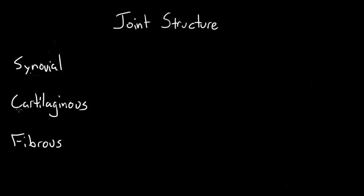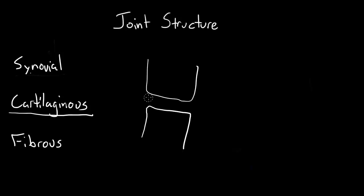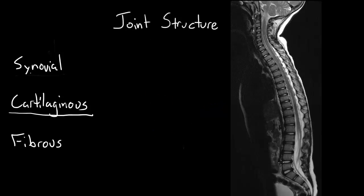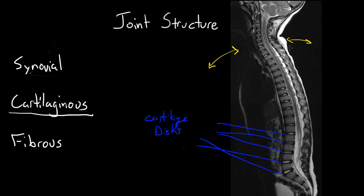Cartilaginous joints are two bones directly connected by cartilage. Because of this direct connection, there's a lot less mobility than with synovial joints, though a certain degree of movement is maintained. The joints of the spine — the intervertebral joints — are the best examples. Here's an MRI of the spine in the sagittal plane, so it's like you're looking at the patient standing upright from the side. Between each vertebral body you can see a large cartilaginous disc. Each individual joint allows only limited motion, but in combination they can be quite flexible. There's no fluid or synovium in these joints. Other examples would be the pubic symphysis or the sternoclavicular joints.